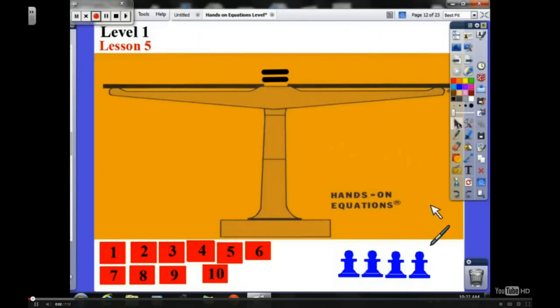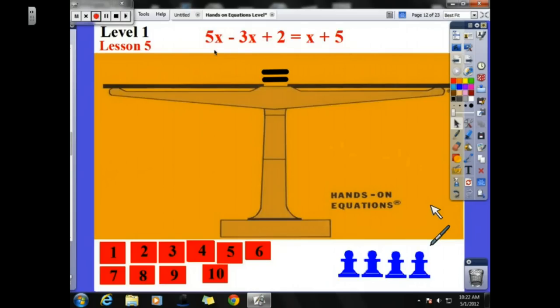Okay, gang. Welcome to Hands-On Equations, Lesson 5. And to start with Lesson 5, we are going to look at this particular problem: 5x minus 3x plus 2 equals x plus 5. This right here, this minus 3x, that's the new piece of our puzzle. So it's really simple, gang.